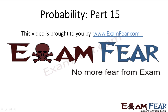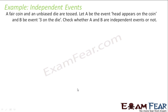This video on probability part 15 is brought to you by examfear.com. Before watching this video, please make sure you have watched parts 1 to 14. A fair coin and unbiased die are tossed. Let A be the event that head appears on the coin and B be the event that three appears on the die. We have to check whether A and B are independent events or not.